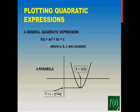This is the general expression of a quadratic: ax² + bx + c, where a, b, c are constants. The shape that a quadratic expression or polynomial will take on a graph will always be a parabola, where you will have a maxima or a minima at a specific point.